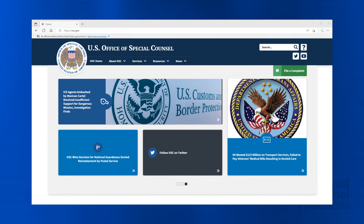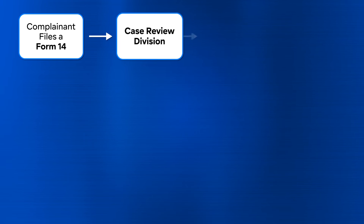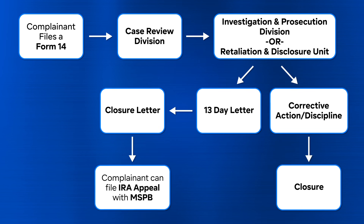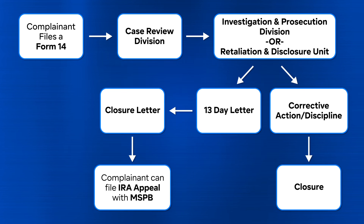Most federal employees, former federal employees, and applicants for employment can file a complaint alleging any of the 14 prohibited personnel practices by submitting a completed OSC Form 14, which can be found on OSC's website. The Form 14 is required by OSC's regulations to open a complaint of prohibited personnel practices and serves as the crucial first step in helping OSC to understand the basis of the complaint, including the specific PPPs being alleged. The Form 14 will ask specific questions based on the PPPs identified by the filer, and it is important to answer the questions fully and completely. Additionally, the filer may attach relevant documents to the Form 14, such as disciplinary action notices.